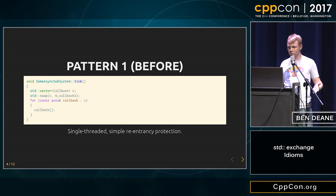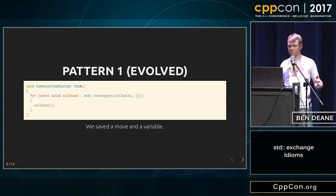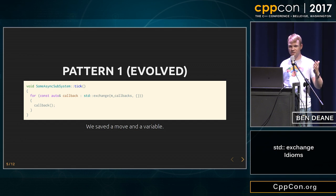We don't need swap here. There's a simple substitution we can make — we just use std::exchange. We exchange callbacks with the empty vector and just iterate it. We save the move, we save the variable. That's pattern one.